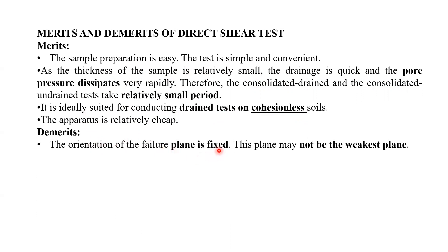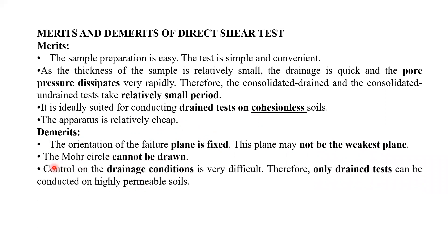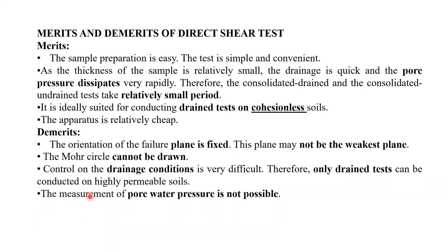Disadvantages of the direct shear test: the orientation of the failure plane is fixed, which may not be the weakest plane — that is the major disadvantage. In the triaxial shear test, failure occurs along the weakest plane, but here the failure plane is already predetermined. The Mohr circle cannot be drawn. Control on drainage conditions is very difficult, so only drained tests can be conducted on highly permeable soils. Measurement of pore water pressure is not possible.